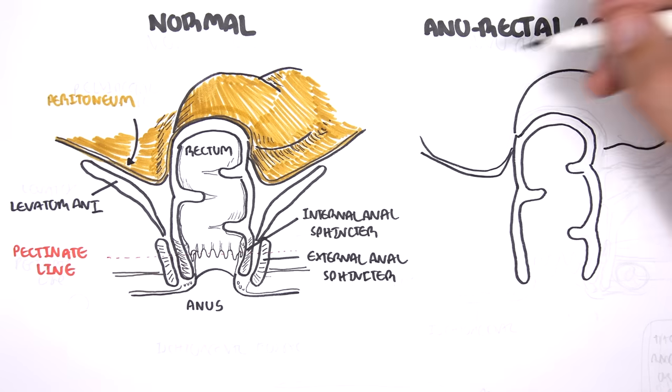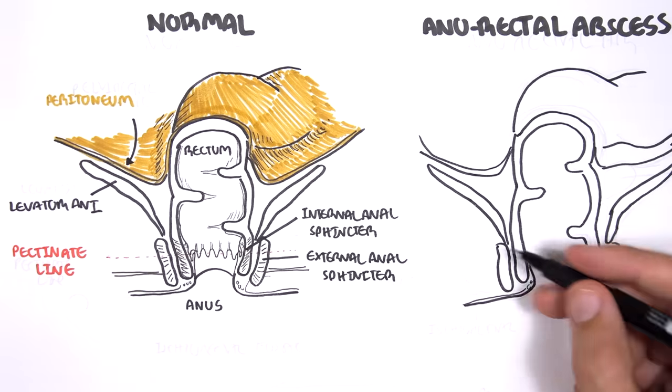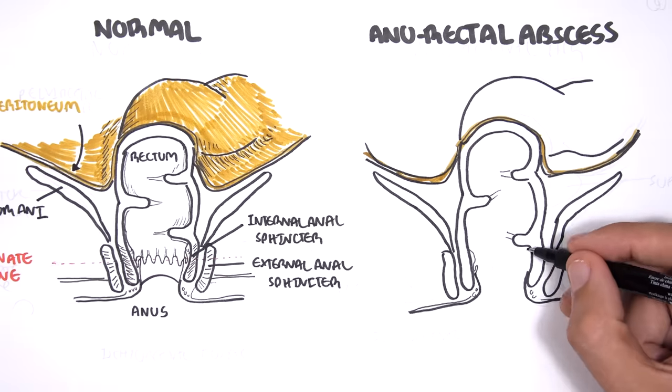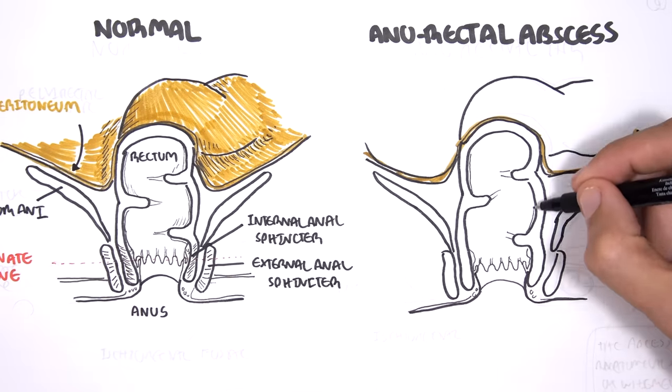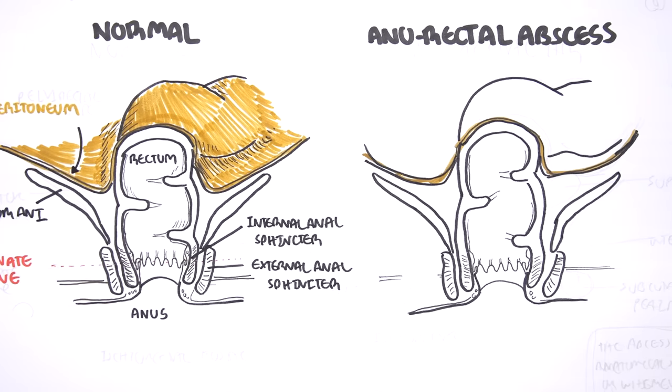Now let us look at the anorectal abscess. They can occur in many areas around what we have drawn. They can be deep or they can be superficial. Depending on where the abscess occurs, the abscess is referred to or called different things.